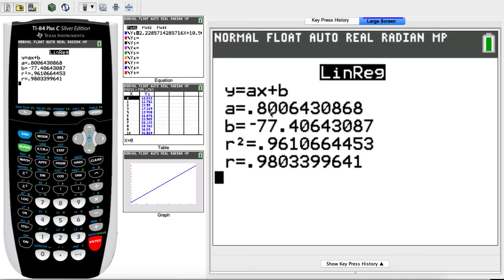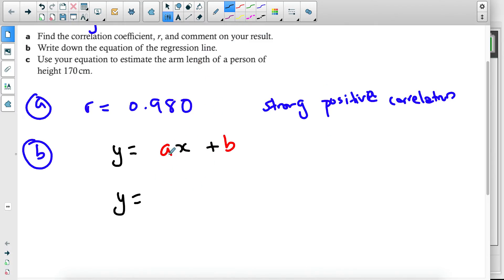A is 0.801. If I round it now to three significant figures, and I'm not talking about three decimal places, I'm talking about three significant figures. 0.8, that's my first significant figure. 0.8, 0, and then six rounds the second zero. So it's going to be, for the a value, it's going to be 0.801. And then you just write the x there.